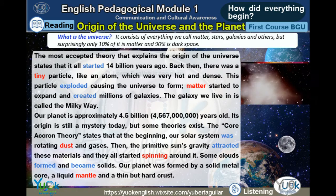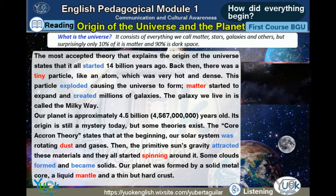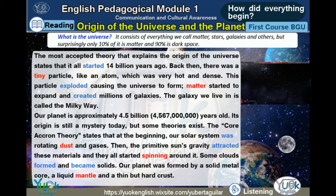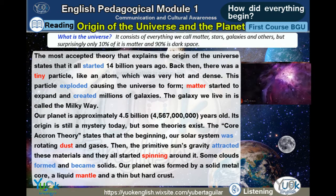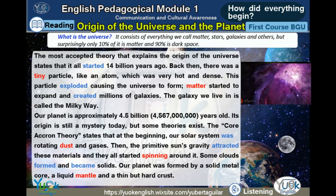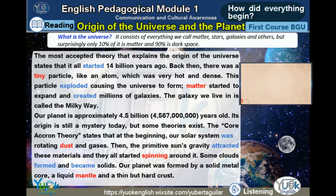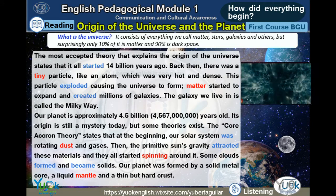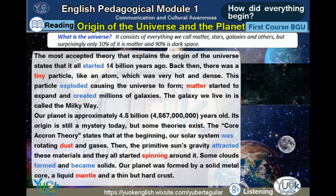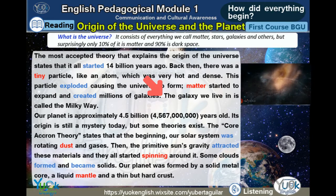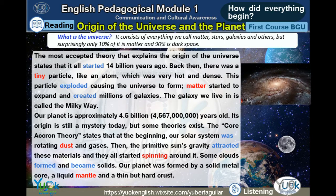The most accepted theory that explains the origin of the universe states that it all started 14 billion years ago. Back then, there was a tiny particle, like an atom, which was very hot and dense. This particle exploded causing the universe to form, matter started to expand and created millions of galaxies. The galaxy we live in is called the Milky Way.